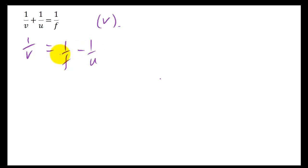So we need to add these two fractions together, and to do that, you need a common denominator - the same thing on the bottom. And the way to do that is if you times top and bottom of this by U, you get FU on the bottom. Times top and bottom of this by F, you get FU on the bottom.